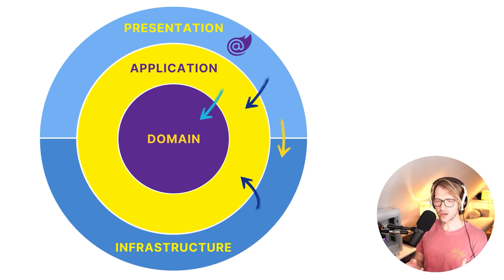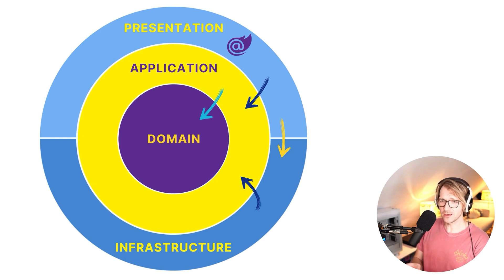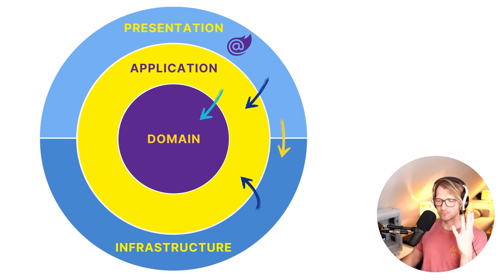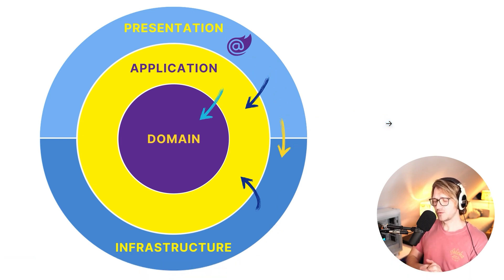The arrows mean this is the direction in which you reference the different layers and projects. The domain has no reference to any other layer. The application layer references the domain, and then the presentation and infrastructure also reference the application layer. You might also need to reference the infrastructure layer in the presentation layer so everything makes sense and you have access to everything you need.